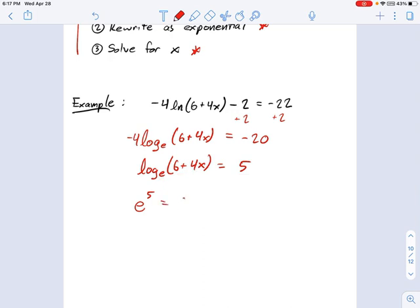Okay, so e^5 = 6 + 4x, and we're just about ready to solve this now. We just subtract 6 from each side and say e^5 - 6 = 4x, and then divide each side by 4. So we get (e^5 - 6)/4 = x.